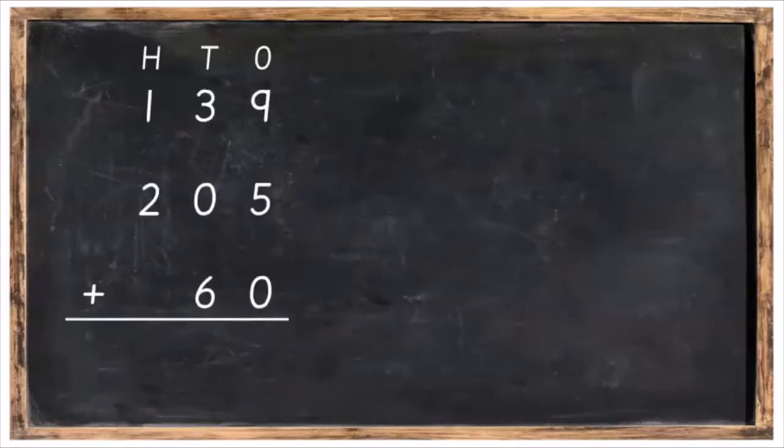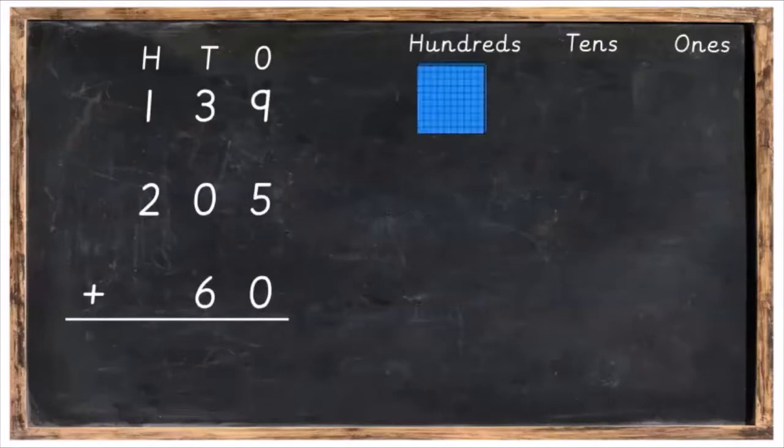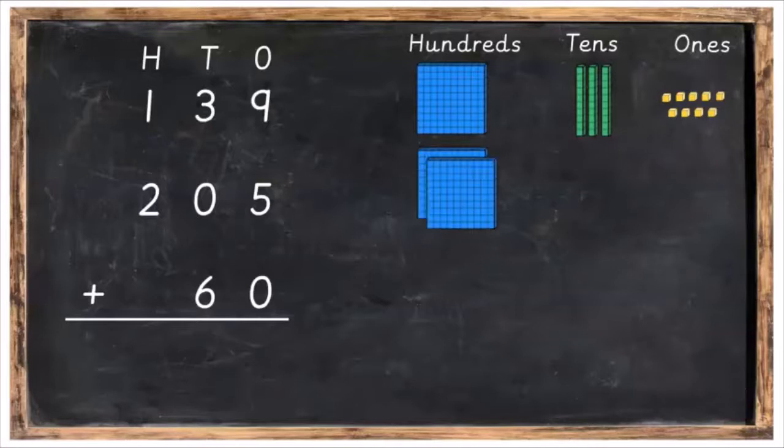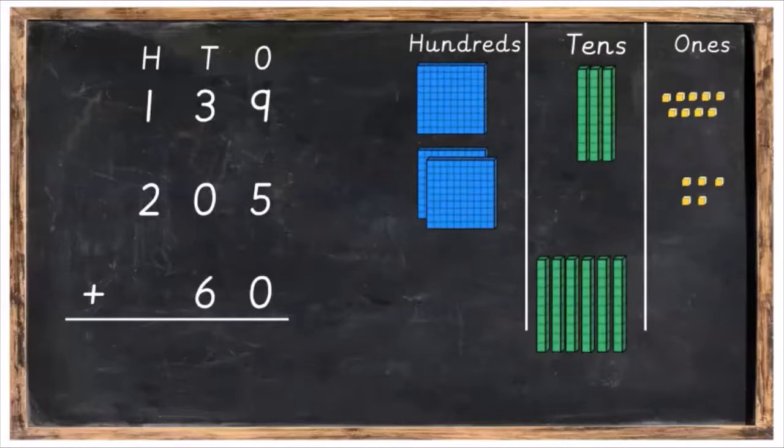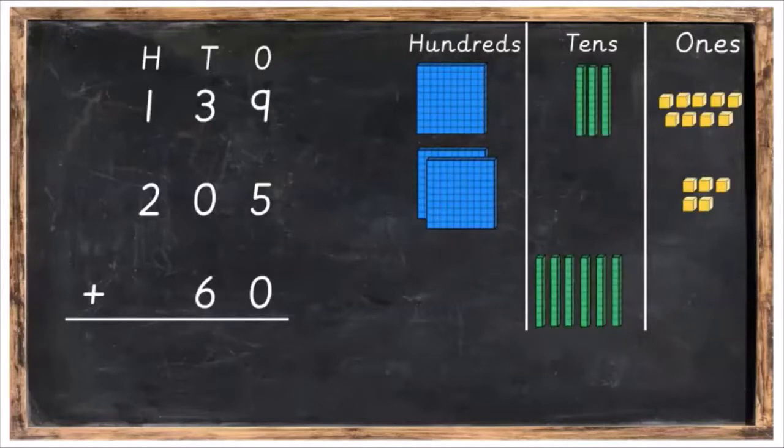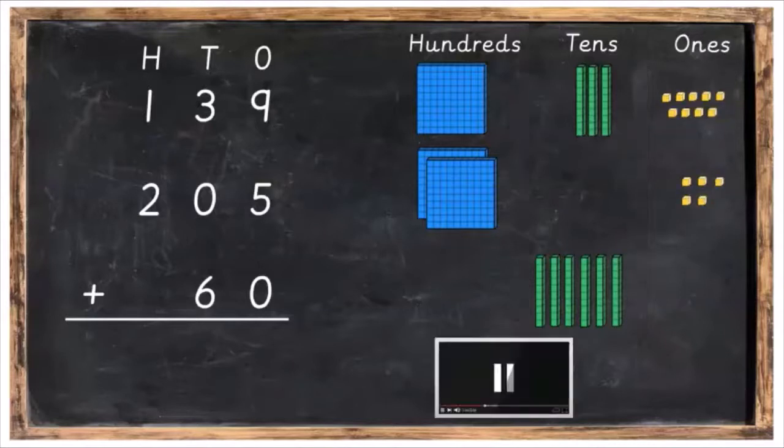We're going to take that sum that we've just done, and we're now going to make it with hundreds, tens and ones. So we're going to need 100, three tens, and nine ones for 139. Then we're going to need two hundreds, no tens, and five ones for 205. And then finally, we're going to need six tens and zero ones for 60. When we're making a sum, just make sure that the hundreds, tens and ones are underneath each other, because that's really important for adding them. Press pause, and when you're ready, press play again.